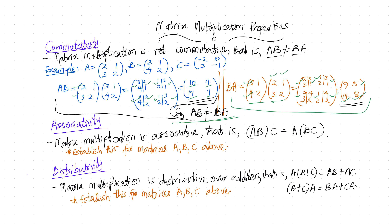Unlike commutativity, matrix multiplication IS associative — meaning (A×B)×C = A×(B×C). I'll leave this for you as an assignment: using matrices A, B, C given above, compute A×B first (we got [10,4;17,7]) and then multiply by C = [−2,0; 3,−1]. Then compute B×C first and multiply A by that result — and you'll discover they are the same.